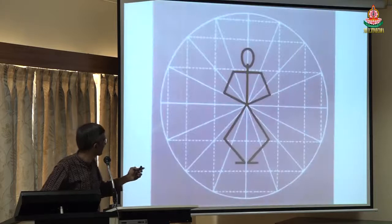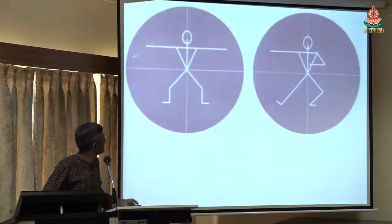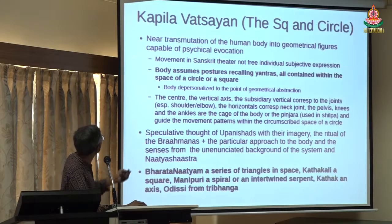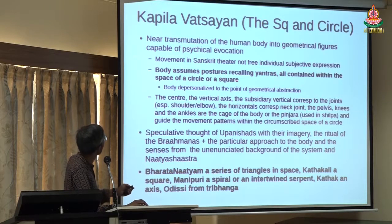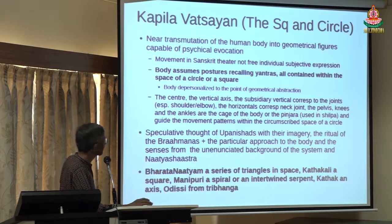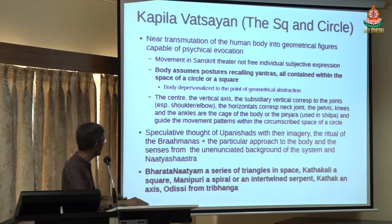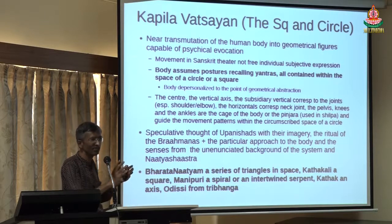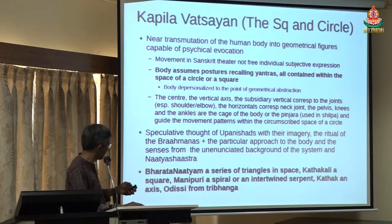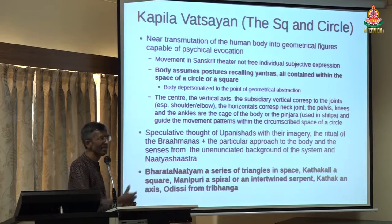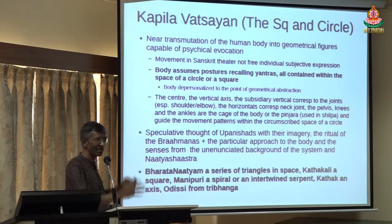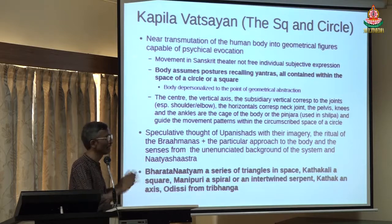This is what is called Ardha Mandapa or Aramandi of Bharatanatyam. What is interesting is that the body assumes postures recalling yantras, all contained in the space of a circular square. Bharatanatyam is a series of triangles in space, whereas Kathakali is a square, Manipuri is a spiral or intertwined serpent, and Kathak is axial — you rotate and various angular motions are made. This is the tribanga. The whole dance forms are constructed of various kinds of interesting shapes, and Bharatanatyam's Aramandi and related forms involve a lot of triangles in succession.